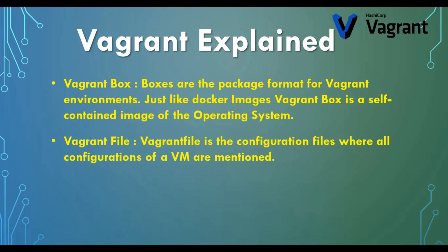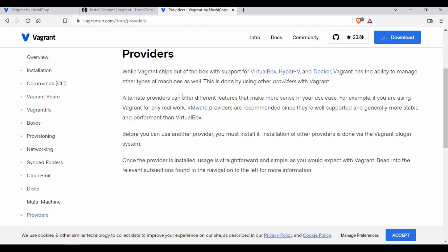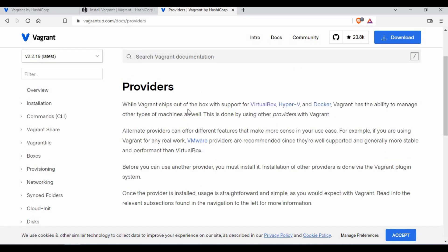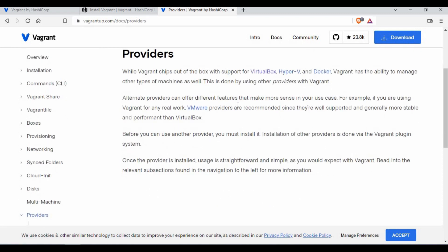Another key concept is the Vagrantfile — this is the configuration file where all the configurations of your VM are defined. If you're spinning up a CentOS machine, the Vagrantfile defines how CentOS should be configured. Additionally, Vagrant uses providers on the backend, such as Oracle VirtualBox, VMware, or Hyper-V, to actually run the Vagrant boxes. There are also different plugins compatible with Vagrant.